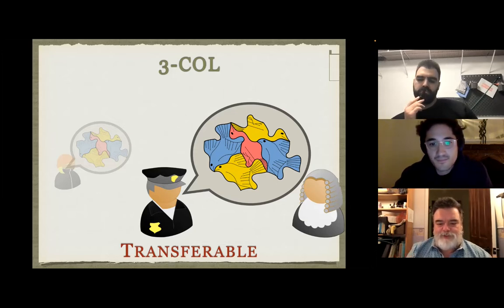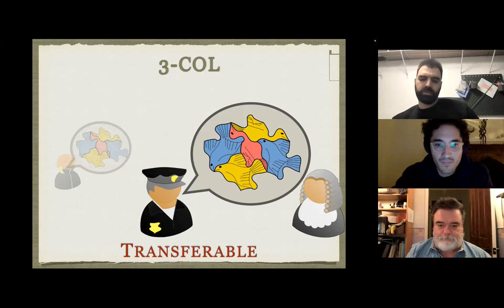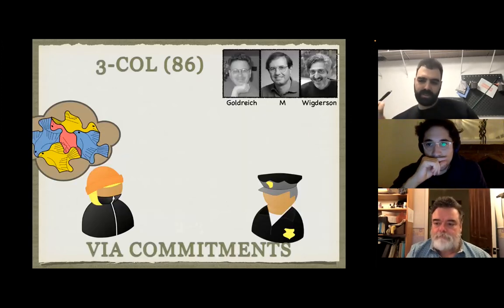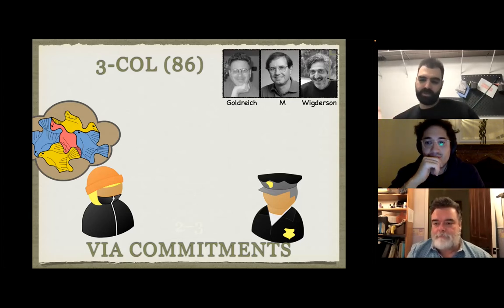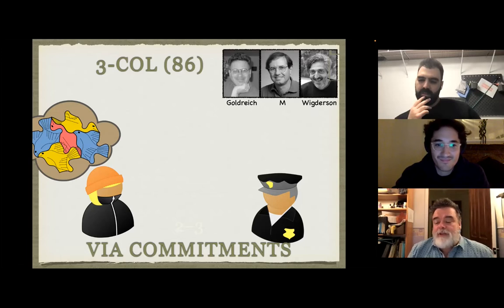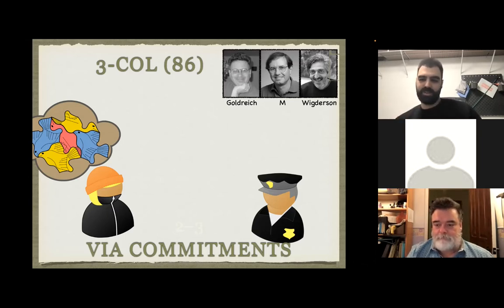We're after something much more subtle that allows the prover to convince the verifier, but not the verifier to convince the adjudicator. In the real ATM example, we have soundness and completeness but not zero-knowledge. When you give away your PIN, you're essentially giving away the equivalent of the coloring. In the implementation we'll describe, we'll get all three: completeness, soundness, and zero-knowledge, but through a different method.